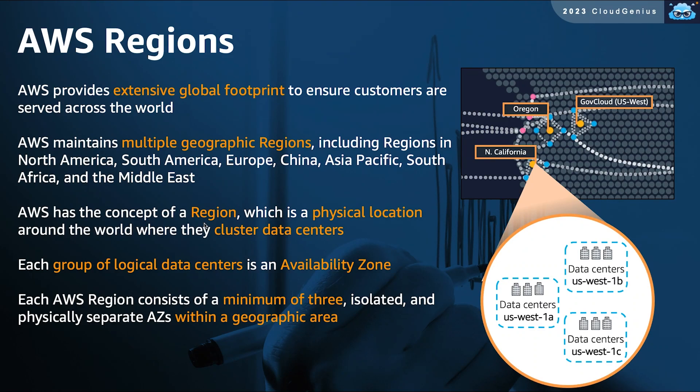Through AWS Regions, AWS provides an extensive global footprint in multiple locations across the world, to ensure that worldwide customers are served with the best end-user experience. An AWS Region is a physical location in a particular geographic area where AWS decided to build its presence with a cluster of data centers to host their infrastructure that will host all of AWS-offered services.